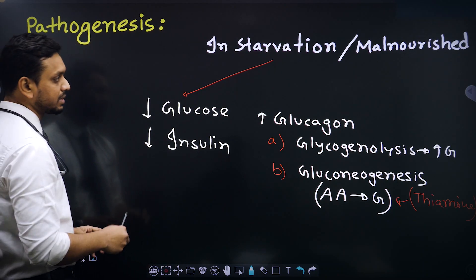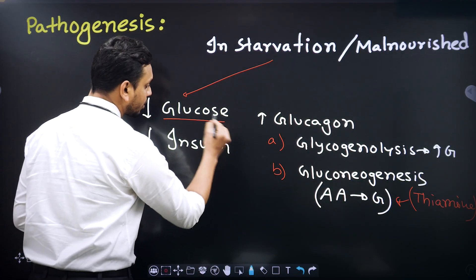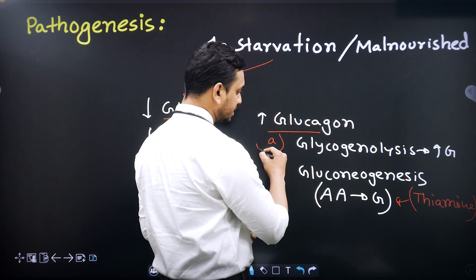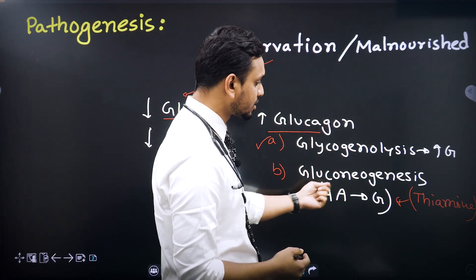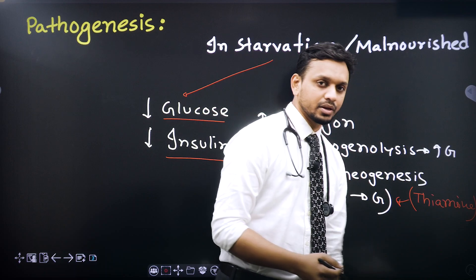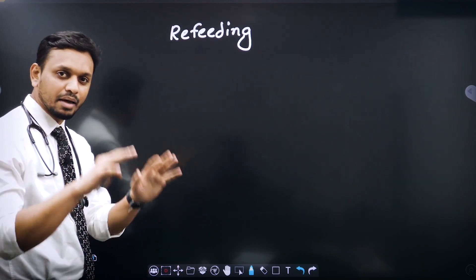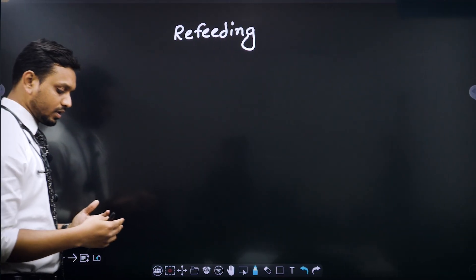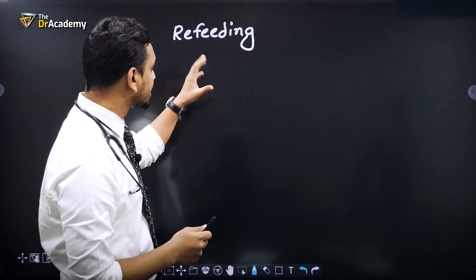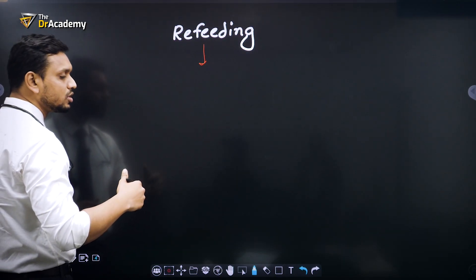So that is why, when the patient is on gluconeogenesis and is malnourished, the patient already has low glucose, low insulin, and gluconeogenesis is initiated — which further consumes thiamine. The thiamine is depleted because gluconeogenesis uses a lot of thiamine, and the patient is already on a deficient diet. So the thiamine level is falling due to this process.